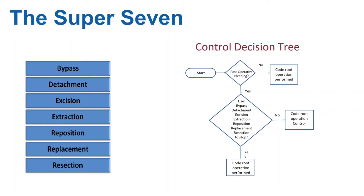The root operation Control is coded only when there is no other specific root operation performed and the whole and sole objective is to stop the bleeding and nothing else. Another important note to remember is that the root operation Control includes irrigation and evacuation of hematomas.